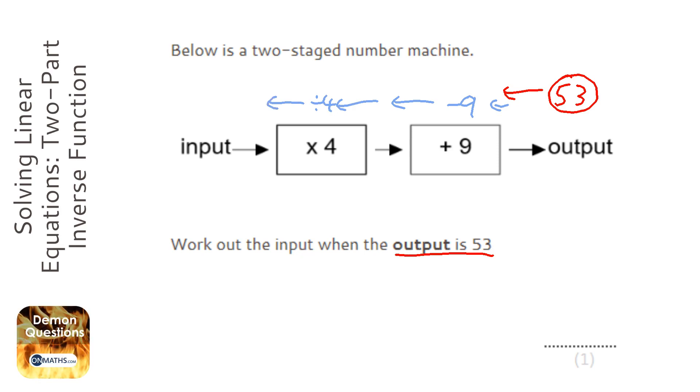Okay, so we're going to have our 53, and we're going to take away 9. So 53 take away 9 is going to be 44. Then we're going to divide it by 4, which will be 11.